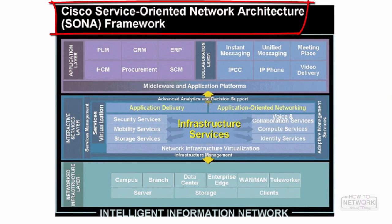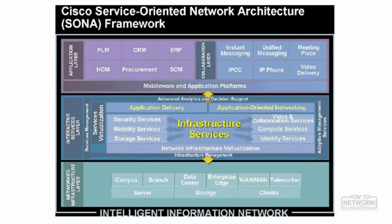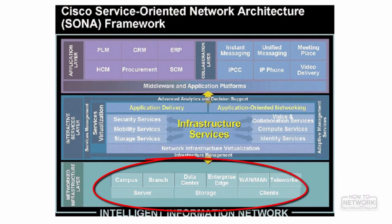SONA divides the IIN ideal into three layers. The Network Infrastructure Layer, also referred to as the Physical Infrastructure Layer, facilitates the transport of services across the network. It refers to a hierarchical converged network that includes servers, storage, and clients, and includes different modular design areas such as WAN, enterprise edge, branch, campus, data center, or teleworker.